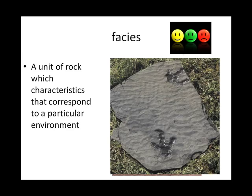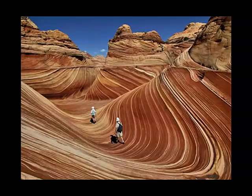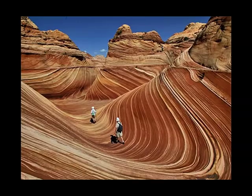All of these will tell you something about the environment in which the rock formed. Let's say you're lucky enough to go to the Wave. The Wave is an amazing formation on the Colorado Plateau of Navajo Sandstone. The cross-bedding on this sandstone, which is pretty dramatic, tells you that this could only have formed in an environment of huge sand dunes.